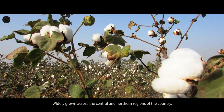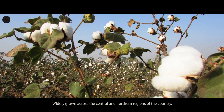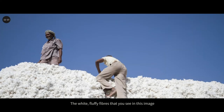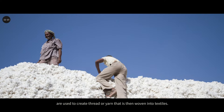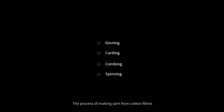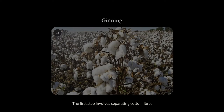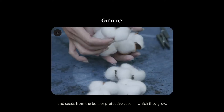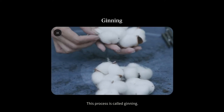Widely grown across central and northern regions of the country, the cotton plant flourishes in warm and humid climates. The white, fluffy fibers that you see in this image are used to create thread or yarn that is then woven into textiles. The process of making yarn from cotton fibers consists of four distinct steps. The first step involves separating cotton fibers and seeds from the ball or protective case in which they grow. This process is called ginning.